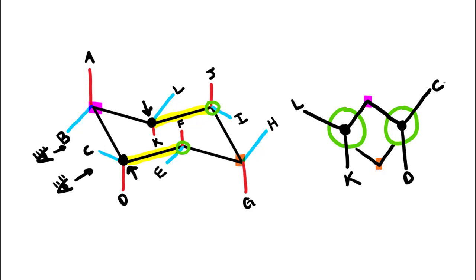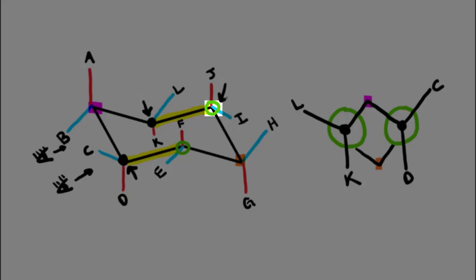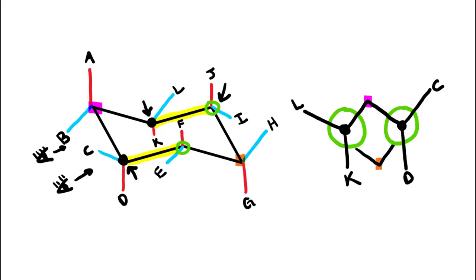Now let's go ahead and move to the back carbons. Starting with the back carbon on the left side — it has the letter J axial up, so straight up attached to the back carbon we're going to have the letter J. Then we also have the letter I equatorial down, so slanted down we're going to have the letter I. On the other back carbon, we have the letter F sticking straight up axially, so on the back carbon we're going to add the letter F. We also have the letter E going down equatorial, so it's going to be slanted down.